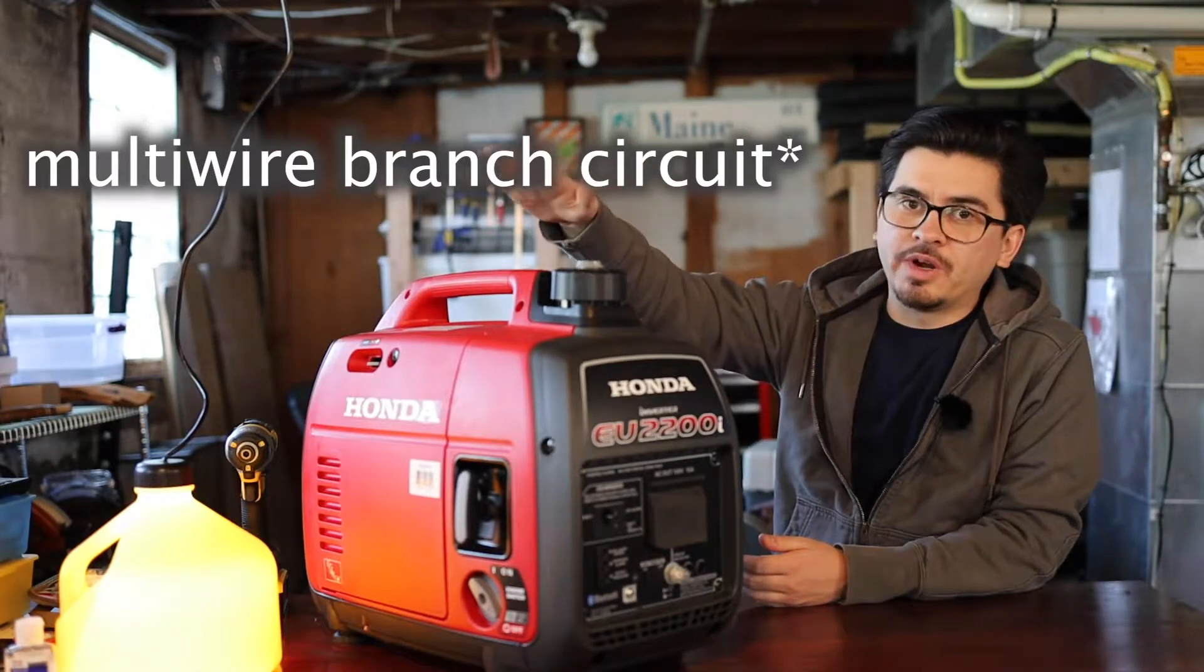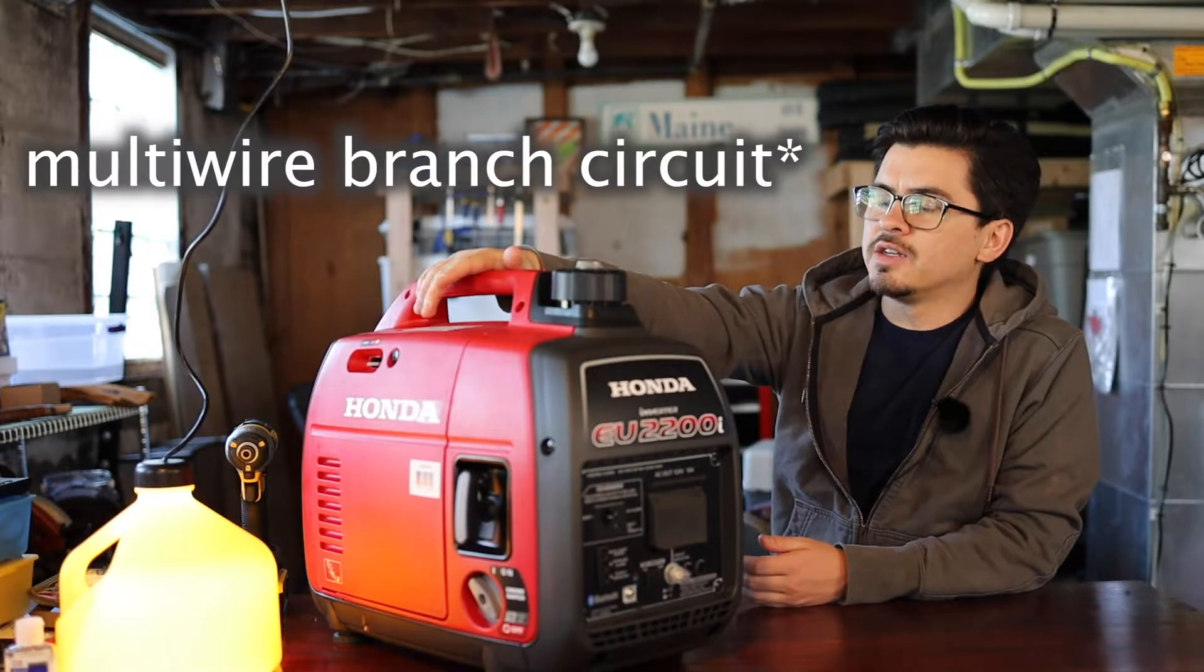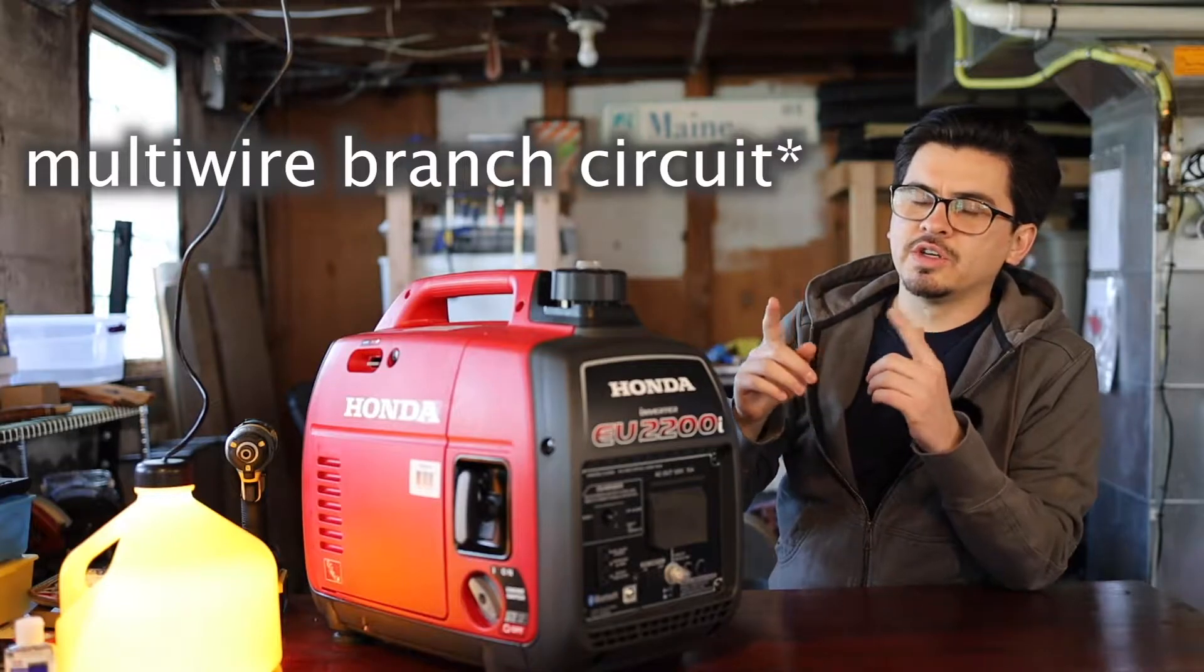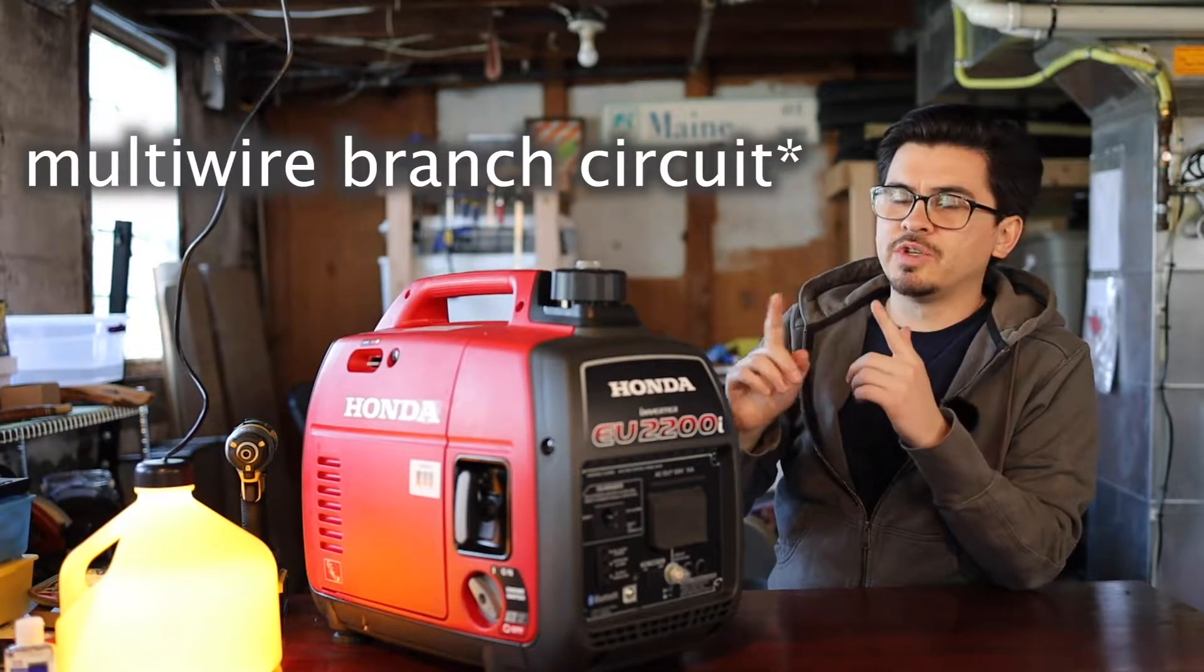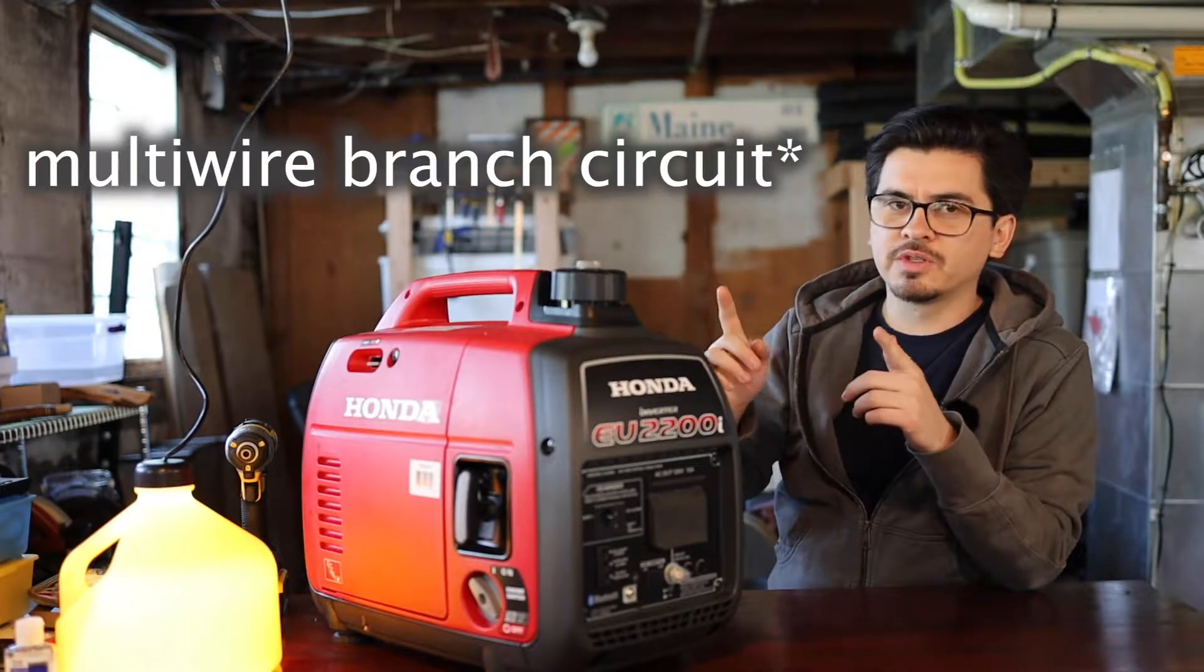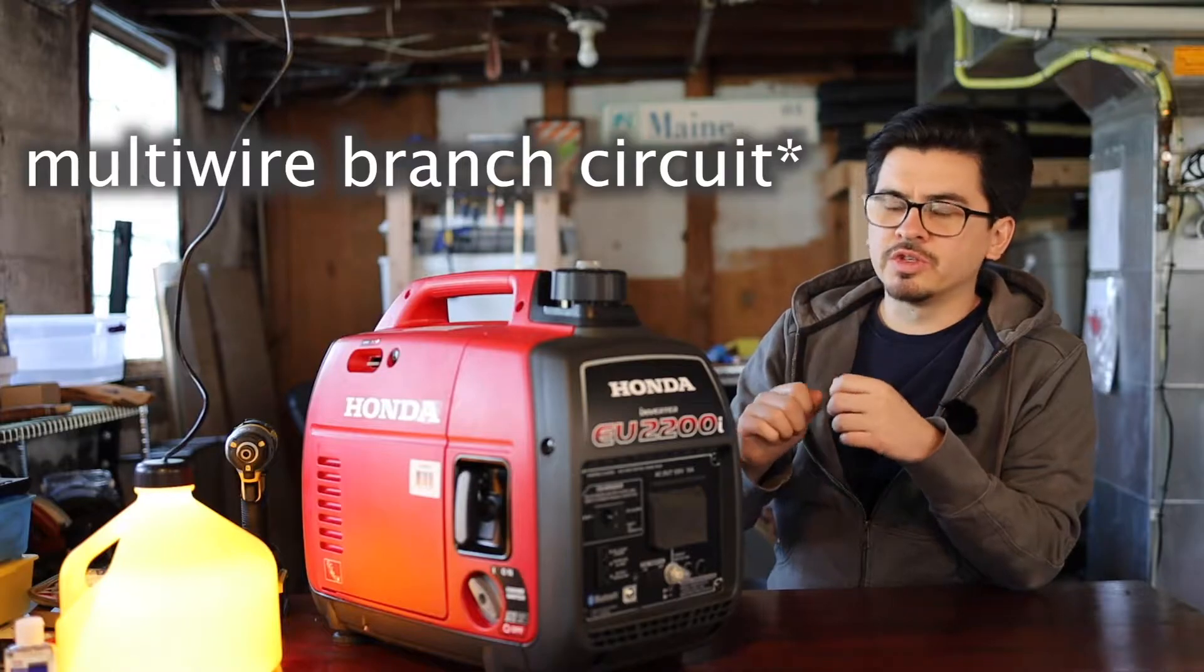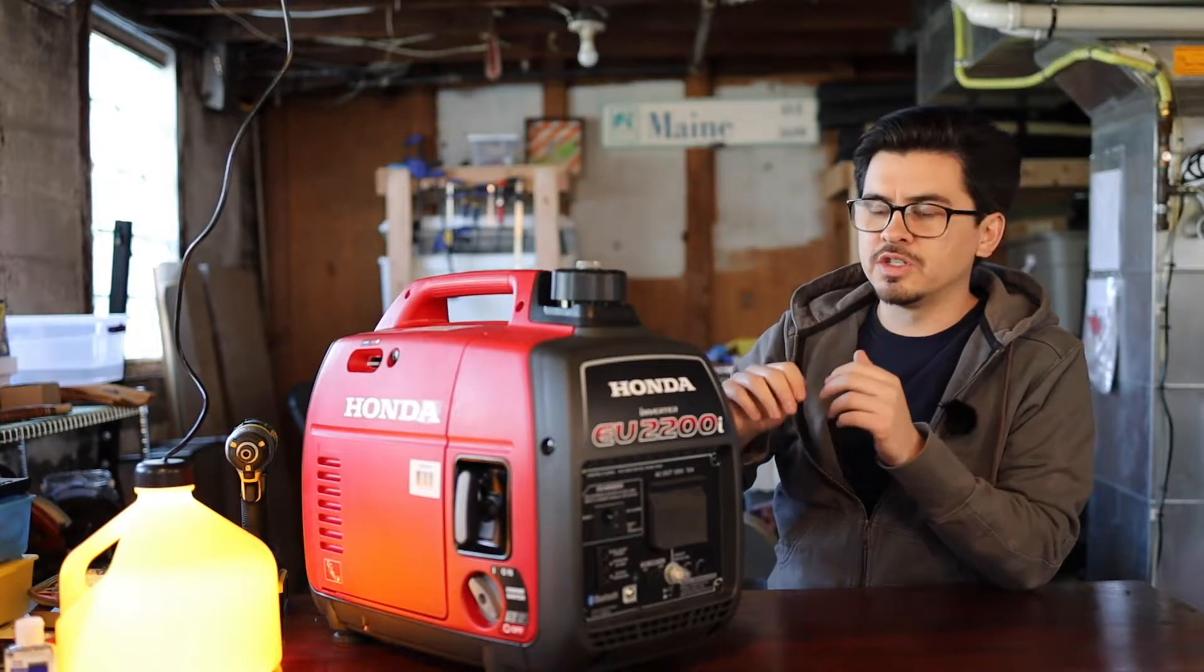For example, my furnace is running off a branch circuit. A branch circuit is when you have two different circuits with two different hot wires running from the circuits in different phases, and they share a neutral. So it's a three-wire system compared to having two circuits with two wires each.